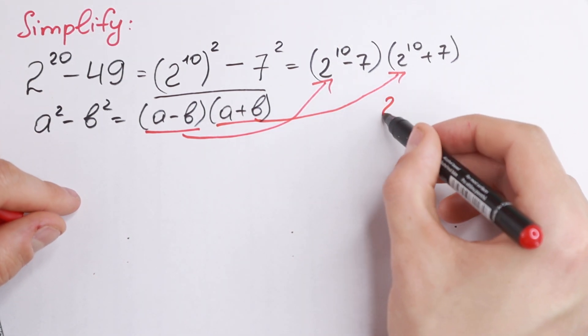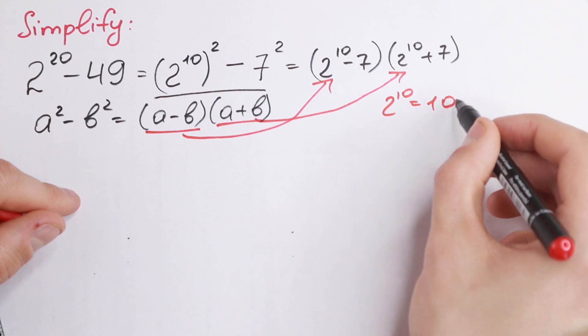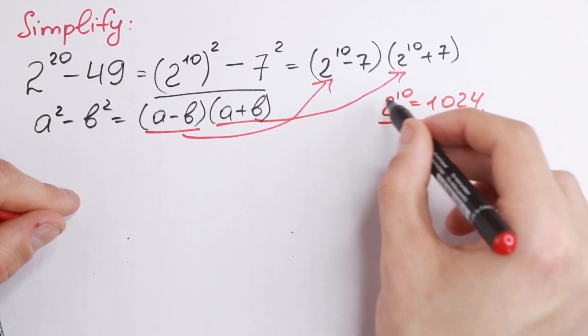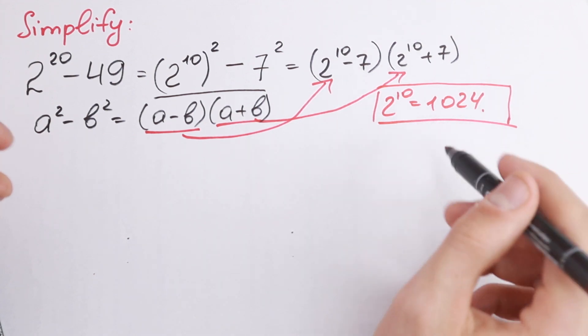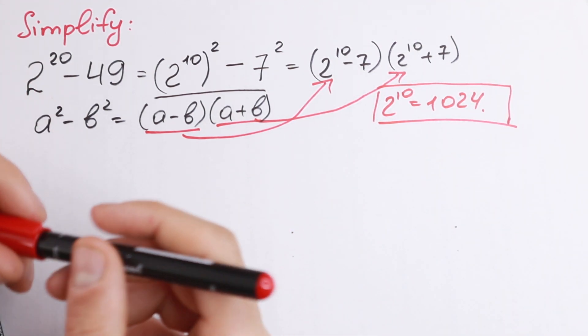So what we're going to do next? We need to know that 2 to the 10th power equals 1024. This is really good to know or remember or learn, because this is a really useful case to know it. And what we're going to do next? Take a look.